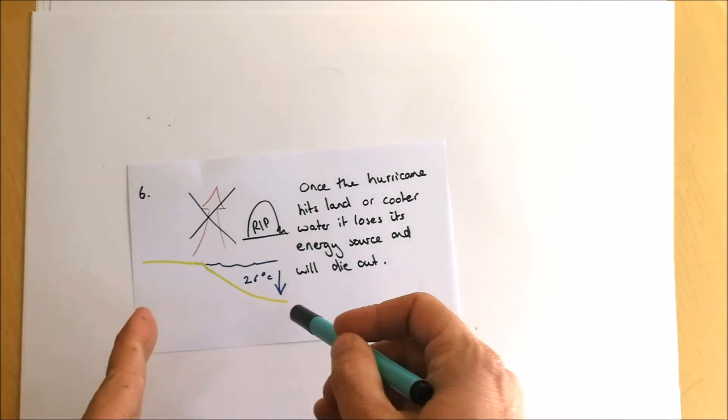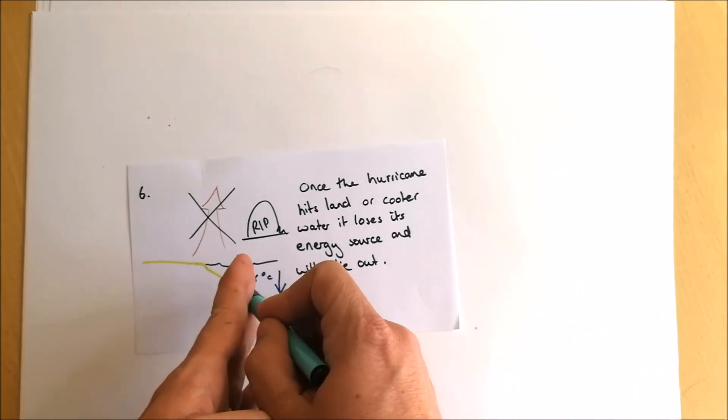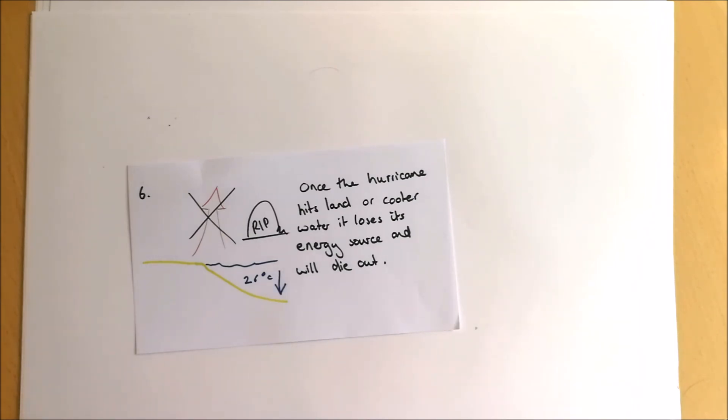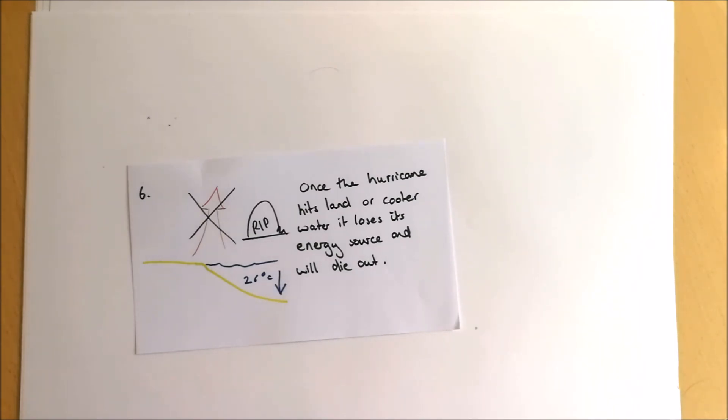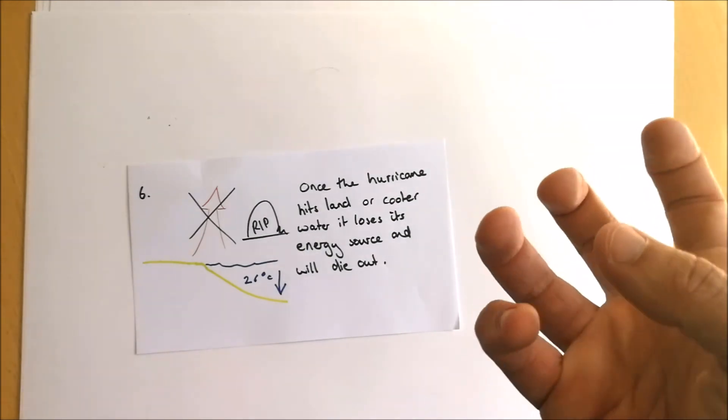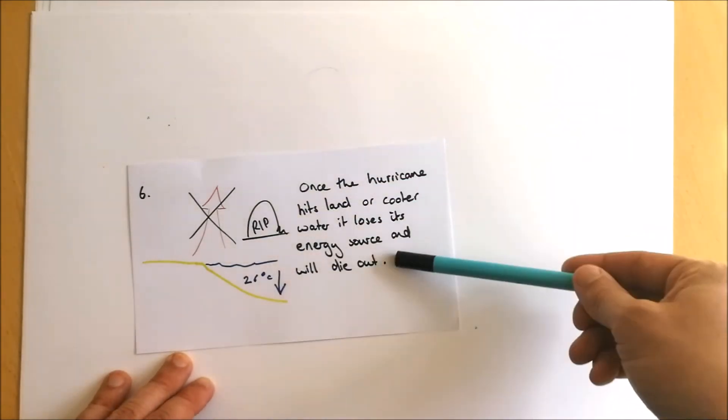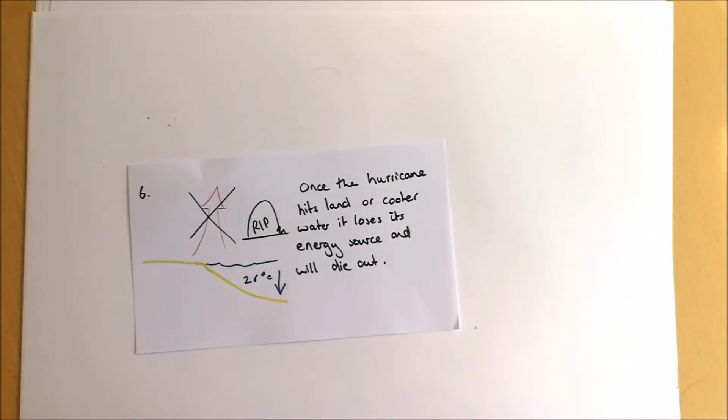However, once the storm moves either over land or starts to move over water that is cooler than that required 27 degrees Celsius, it loses that basic energy source that it needs to create that rising air and therefore that condensation and therefore that latent heat. As a result, the storm starts to run out. That's why you hear about storms, as soon as they make landfall, they start to run out of energy very quickly.